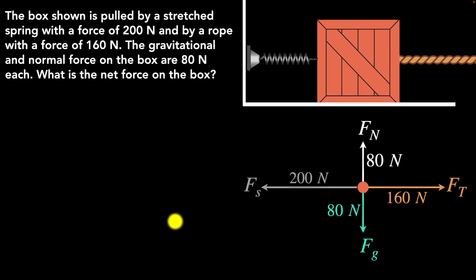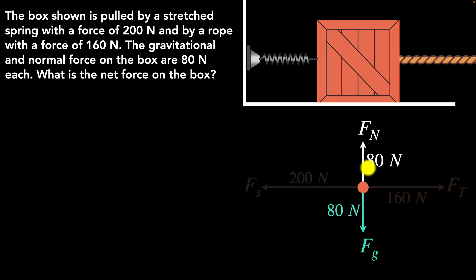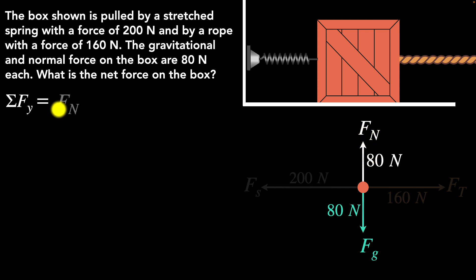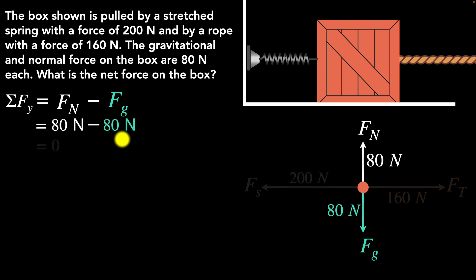Now that we have the forces, we consider the horizontal and vertical directions separately — x and y (and z if needed). Let's look at the y direction first. The net force in y is the normal force minus the gravitational force. Substituting: 80 minus 80 gives us zero. The net force in the vertical is zero — the two forces are equal and opposite and cancel out.